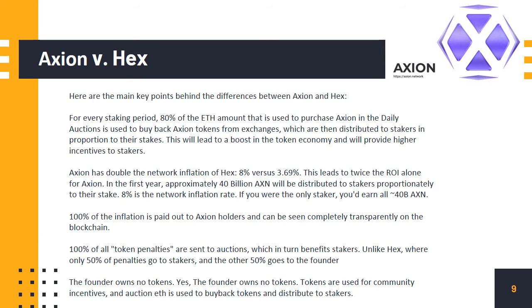8% is the network inflation rate. If you were the only staker, you'd earn all 40 billion AXN. 100% of the inflation is paid out to Axion holders and can be seen completely transparently on the blockchain. 100% of all token penalties are sent to auctions, which in turn benefits stakers — unlike HEX, where only 50% of penalties go to stakers and the other 50% goes to the founder. The founder owns no tokens. Tokens are used for community incentives, and auction fees are used to buy back tokens and distribute to stakers.